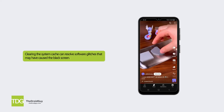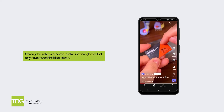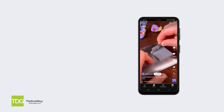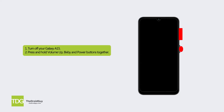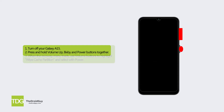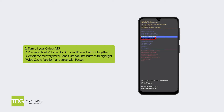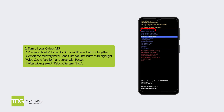Solution 3: Wipe cache partition. Clearing the system cache can resolve software glitches that may have caused the black screen. Turn off your Galaxy A15. Press and hold the volume up, Bixby, and power buttons together. When the recovery menu loads, use the volume buttons to highlight wipe cache partition and select with power. After wiping, select reboot system now.